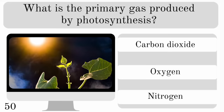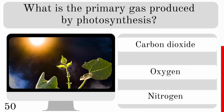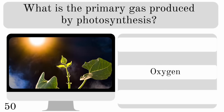What is the primary gas produced by photosynthesis? Is it carbon dioxide, oxygen or nitrogen? The one produced is oxygen.